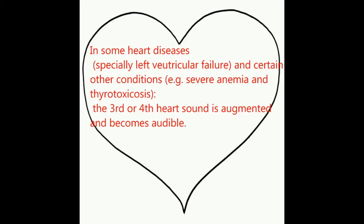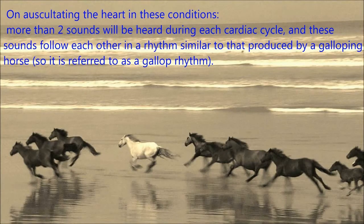In some heart diseases, especially left ventricular failure, and certain other conditions like severe anemia and thyrotoxicosis, the third or fourth heart sound is augmented and becomes audible. On auscultating the heart in these conditions, more than two sounds will be heard during each cardiac cycle, and these sounds follow each other in a rhythm similar to that produced by a galloping horse. So it is referred to as a gallop rhythm.